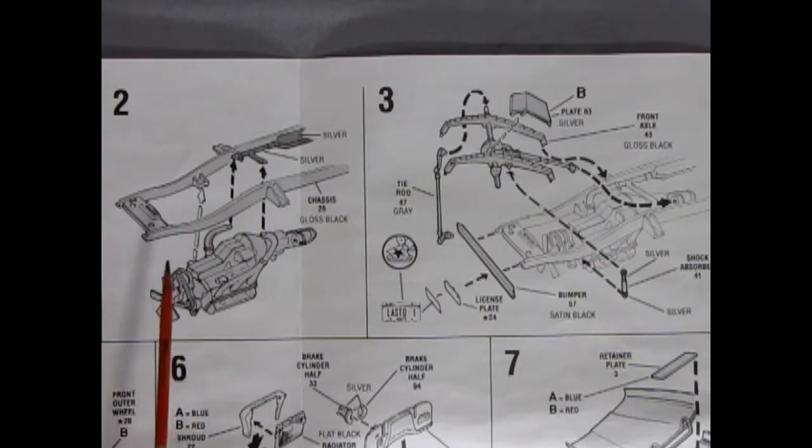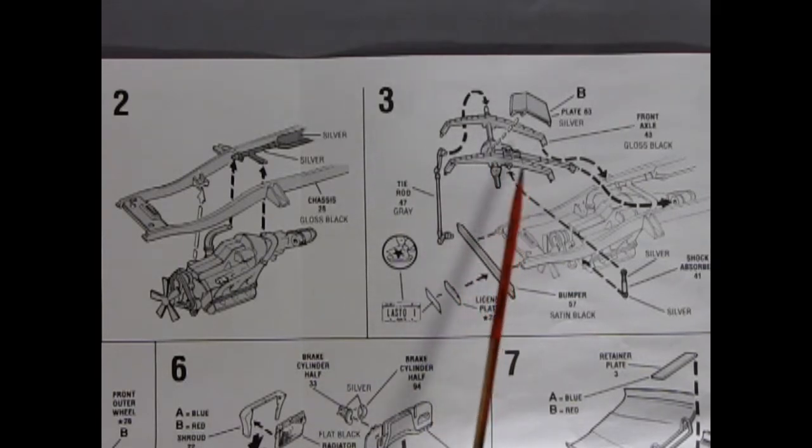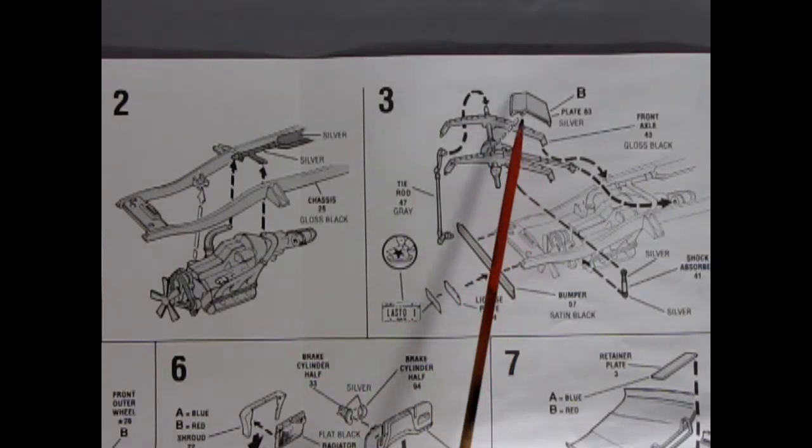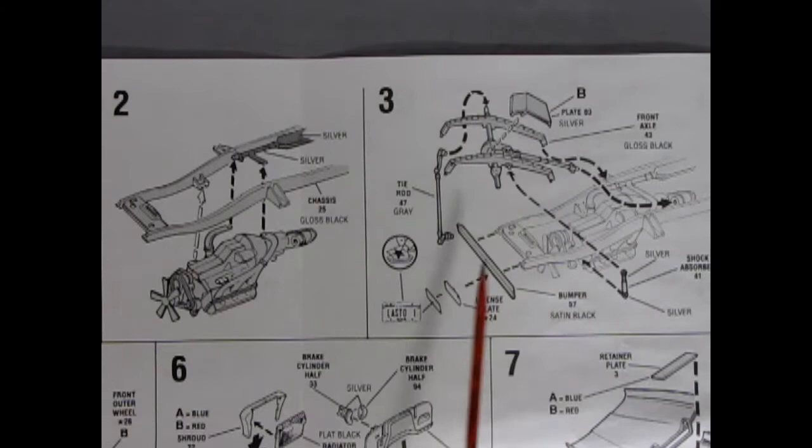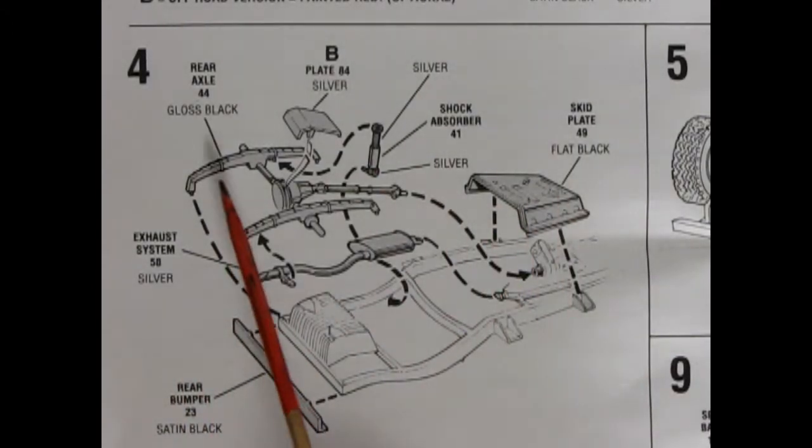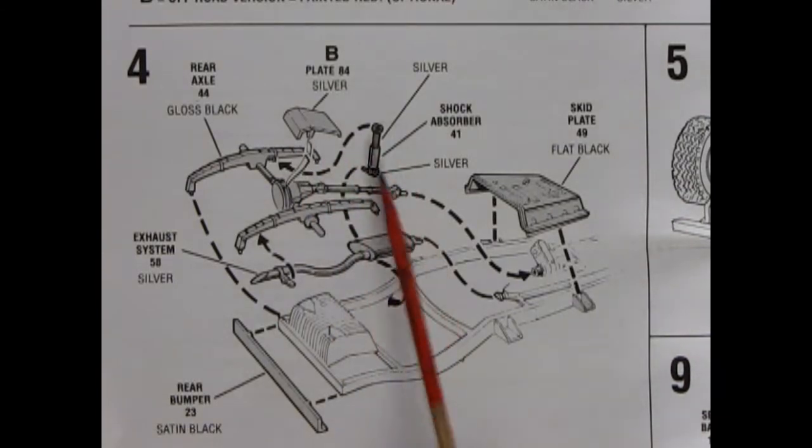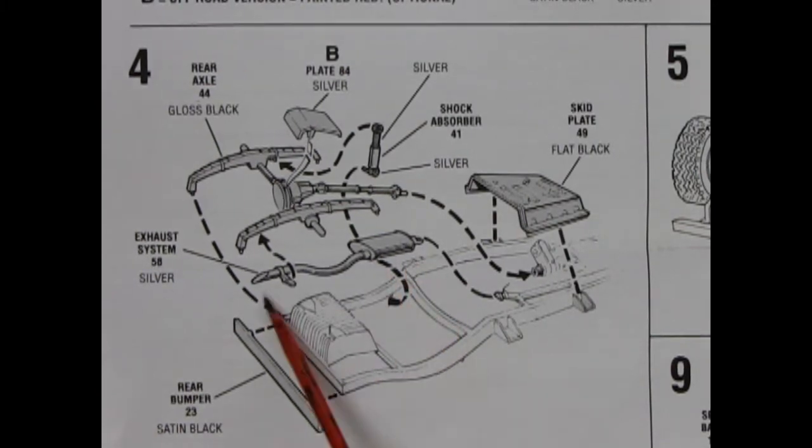Panel 2 shows our engine being glued into the frame. Panel 3 shows our differential with front springs and drive shaft, the plate, tie rod, license plate, front bumper and shock absorbers all being glued in place. Panel 4 shows the assembly in the back end with our rear axle, the plate, shock absorbers, skid plate in the center of the frame, bumper and rear exhaust.